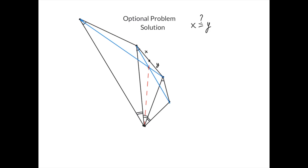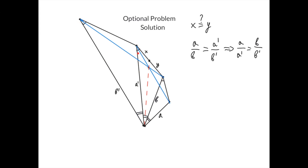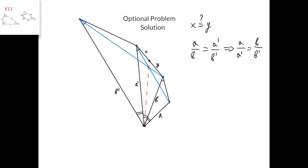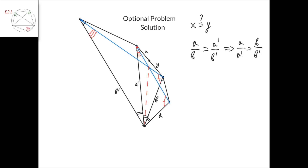To solve this problem, we're going to consider the spiral similarity that sends this segment to this segment. If we denote these lengths as a, b, a prime, and b prime, then we know that a divided by b equals a prime divided by b prime because of the similar triangles. Therefore, a divided by a prime equals b divided by b prime. So we spotted a new pair of similar triangles, because the angle they share is the same — this is twice this small angle. Therefore, we can conclude that this angle equals this angle, and that this quadrilateral is cyclic, and that this quadrilateral is also cyclic.